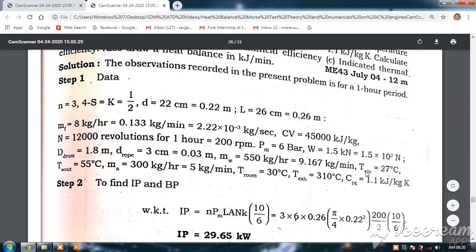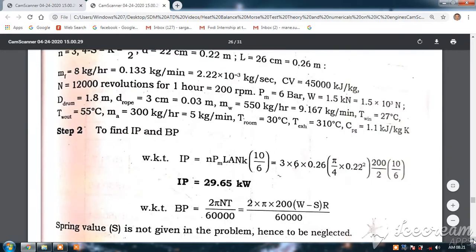That is why everywhere we are doing kg per minute, because they asked this heat balance in kilojoules per minute only. T water inlet 30 degree centigrade, T water outlet 55 degrees centigrade. Mass of air 300 kg per hour, that is 5 kg per minute. Room temperature 30 degrees centigrade, exhaust gas temperature 310 degrees centigrade. CP of exhaust gas is 1.1 kilojoules per kg Kelvin.